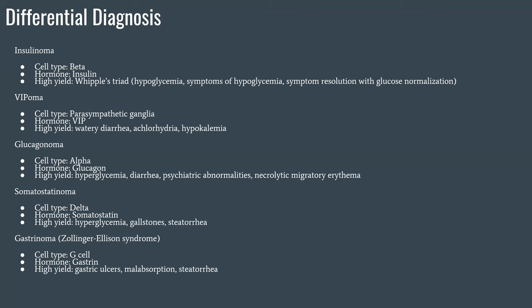Think of somatostatin as the stop sign blocking all pancreatic endocrine secretions — really the stop sign of the endocrine system as a whole. Somatostatin blocks the effects of insulin causing hyperglycemia, blocks the effects of CCK causing gallstones, and blocks the effects of pancreatic lipases causing steatorrhea. Keep in mind that with somatostatinoma, any endocrine hormone in the body could be affected, presenting as the exact opposite of what that hormone normally does.